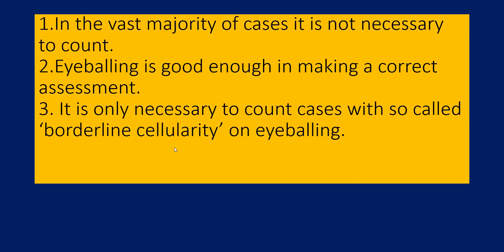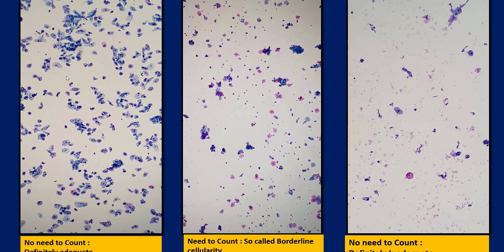For example, looking at the picture on the left — this one has enough cells. With a little experience you can say that there are enough squamous cells to easily be above a 5,000 count, perhaps 8,000 to 10,000. No need to count; by eyeballing you can say this is adequate. The smear to the right has hardly any squamous cells — maybe 4, 5, or 6 — so by looking at it you know it will be inadequate. However, the middle smear has some empty spaces and a few squamous cells here and there — it may or may not be above 5,000 — so this would be the borderline cellularity category where you need to do a formal count.